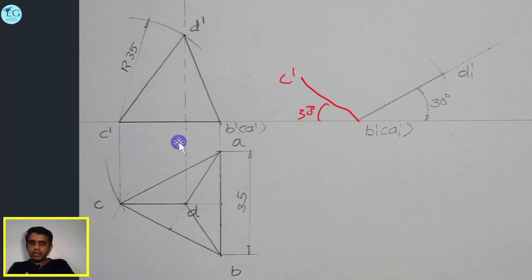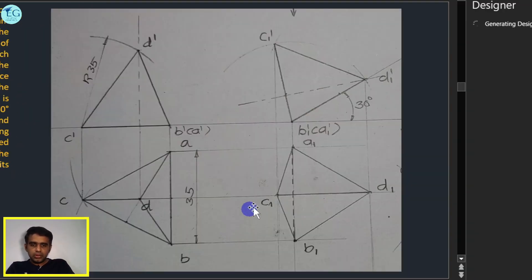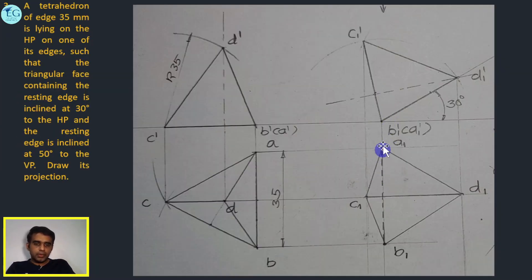I will complete the front view at this stage. In the top view, we draw A1 B1 as a dash line. We are in the next stage with the VP at 50 degrees. The resting edge is inclined at 50 degrees to the VP. The resting edge is AB, AB1.